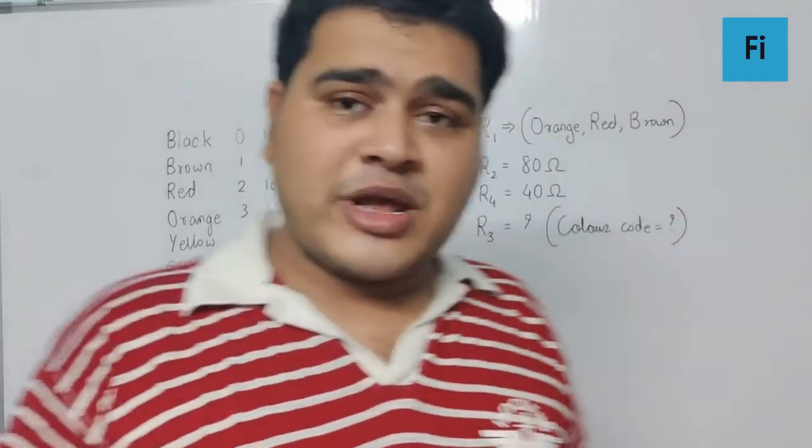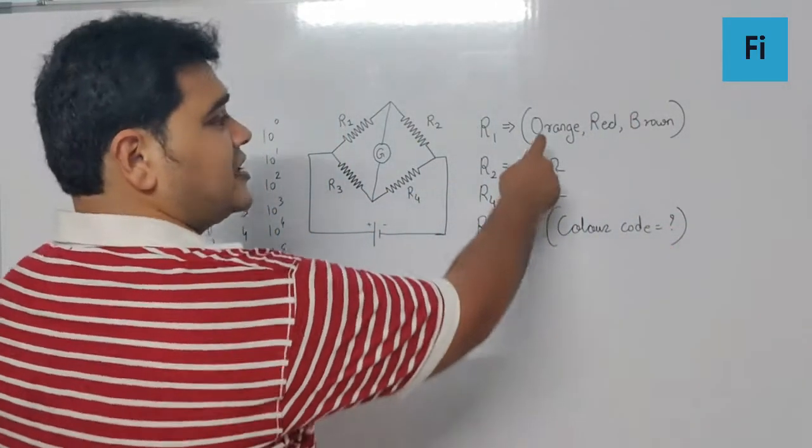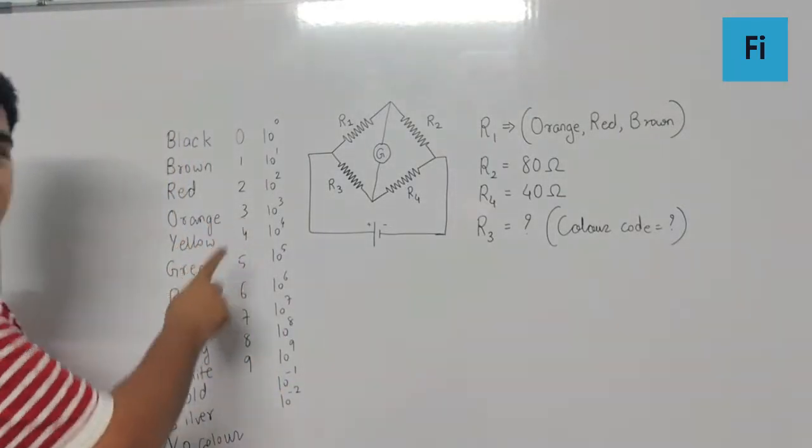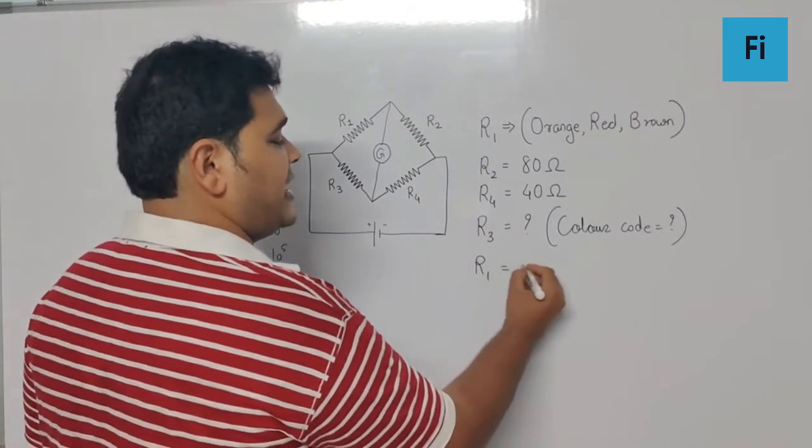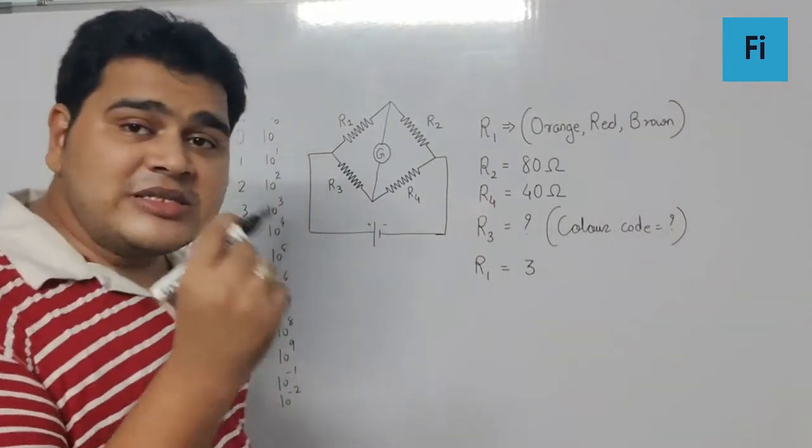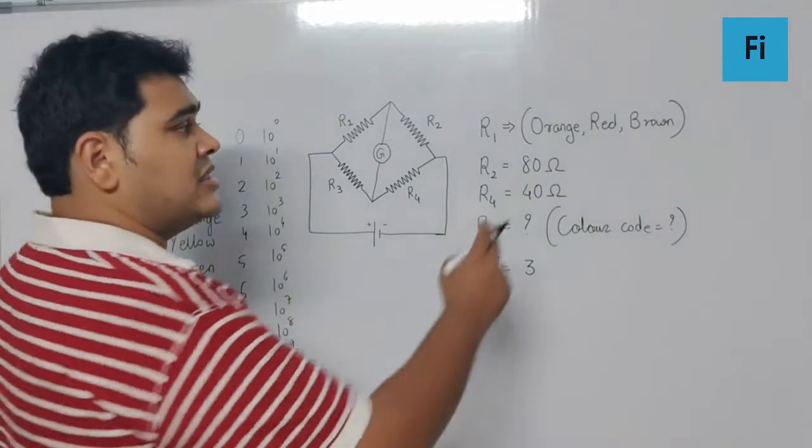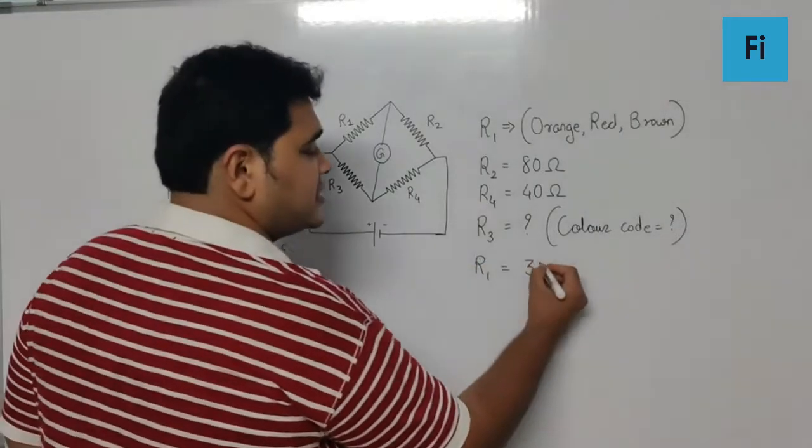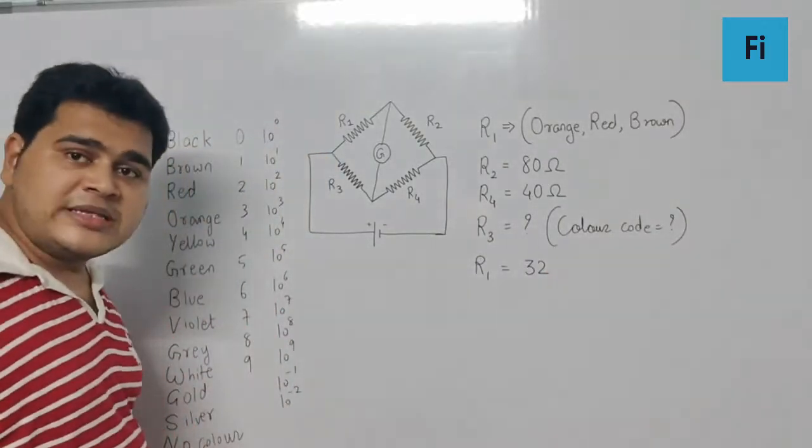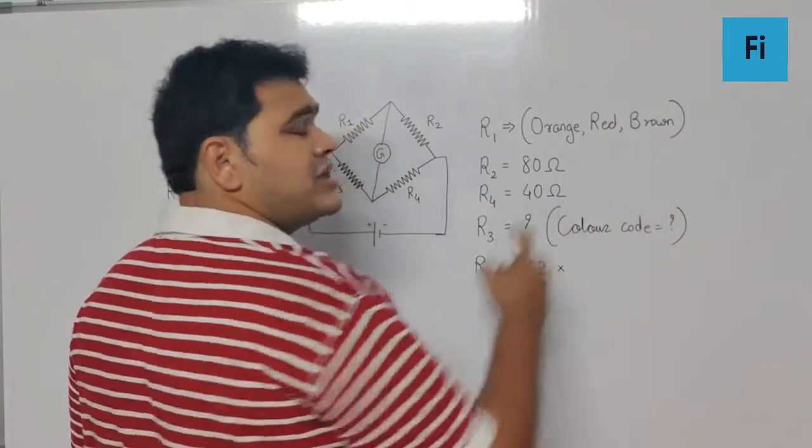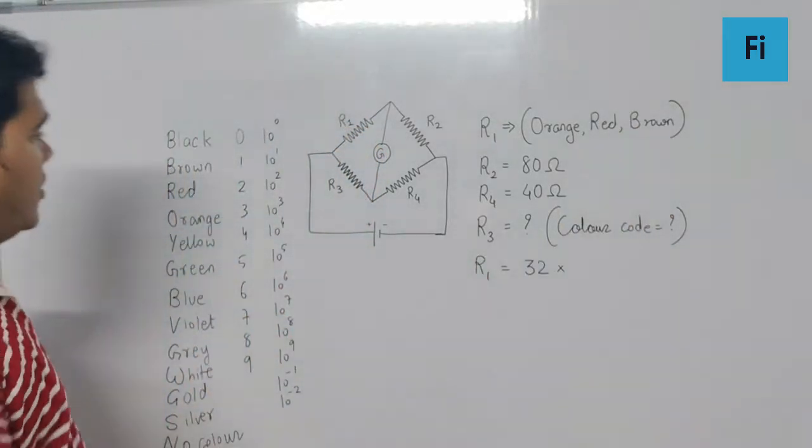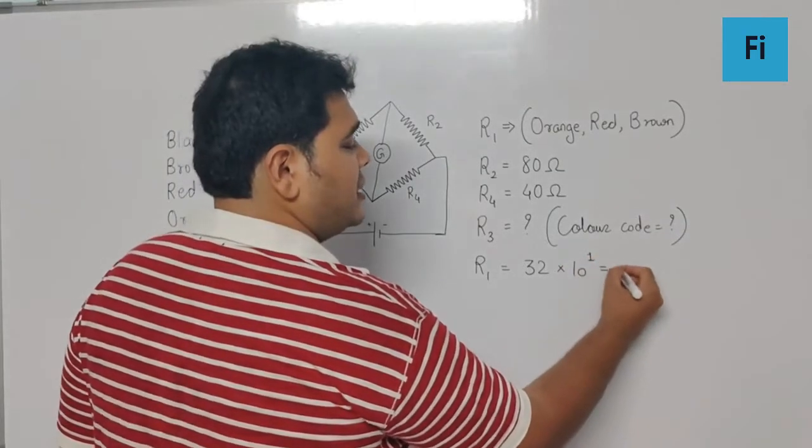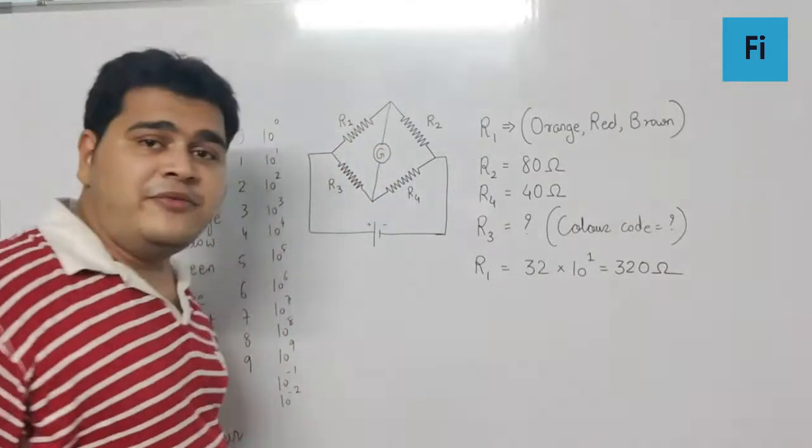Now, how to use that—that is what I'm teaching you. Pay attention here. The first color code is orange, so orange stands for 3. That means R1 will have 3 as the first digit in its resistance value. The second digit will be decided by the red color, so red stands for 2, so it becomes 32. Then brown will decide the power of 10, the multiplier for it. So brown stands for 10 raised to 1, that means 32 × 10¹. So R1 value is going to be 320 ohm.